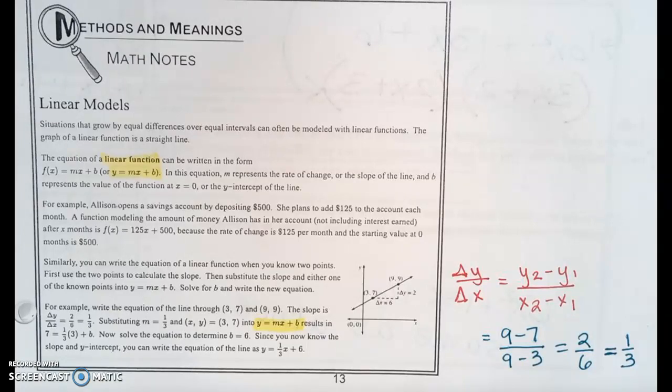For example, Allison opens a savings account by depositing $500. She plans to add $125 to the account each month. A function modeling the amount of money Allison has in her account, not including interest, after x months is f(x) = 125x + 500 because the rate of change is $125 per month and the starting value at zero months is $500.